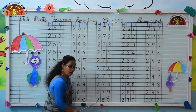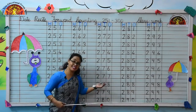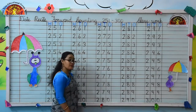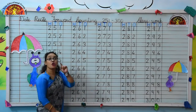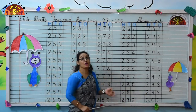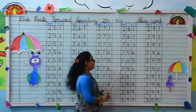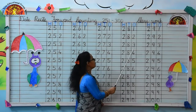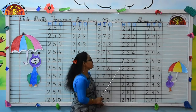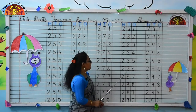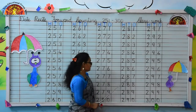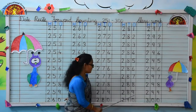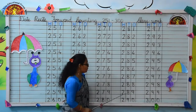Yes kids, what comes after 279? Very good kids, 280. Now what comes after 280? Yes, 281. Very good kids. 282, 283, 284, 285, 286, 287, 288, 289. Kids, now you tell me what comes after 289.